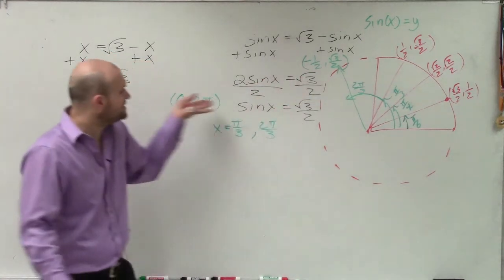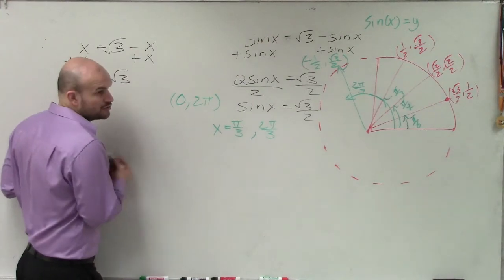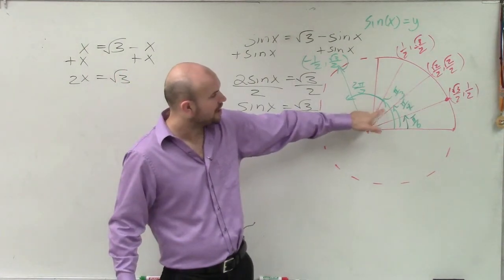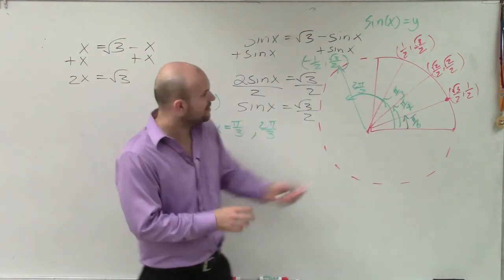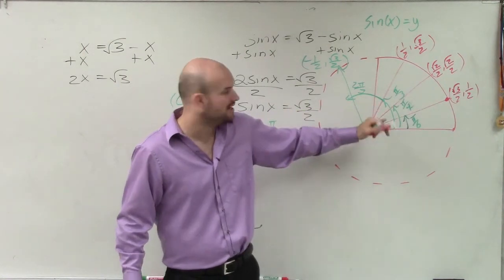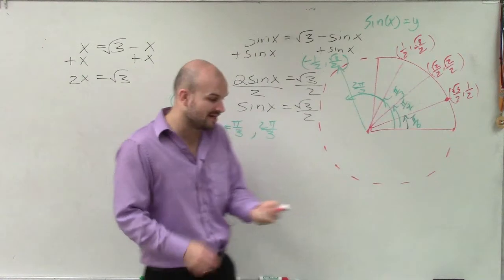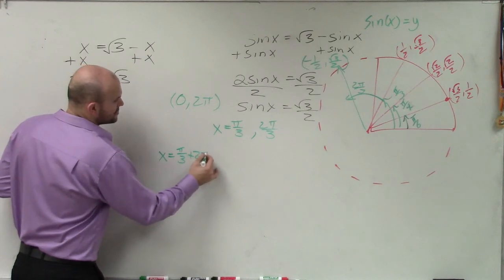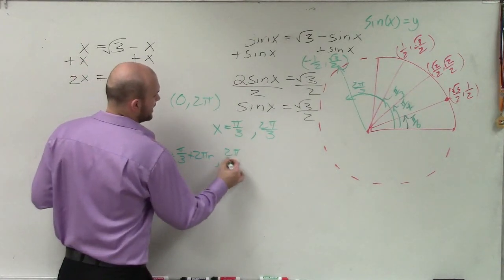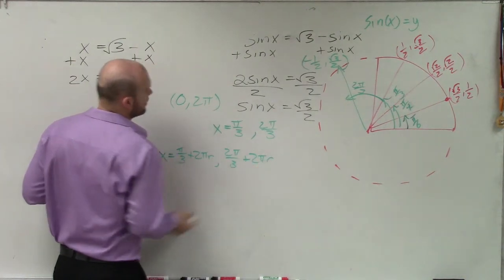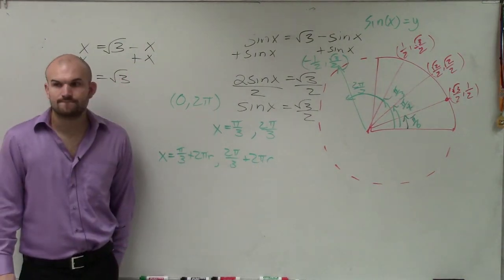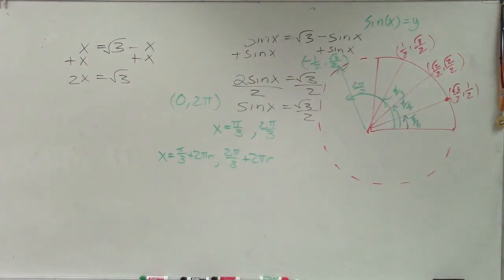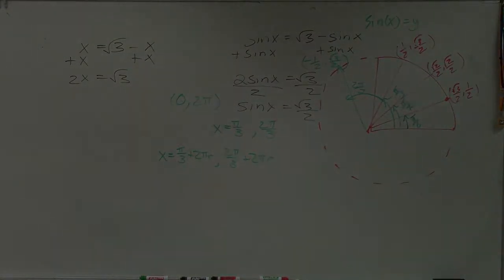Those are two solutions between 0 and 2 pi. However, if I say give me all the solutions, we understand that these two angles are not multiples of each other. So therefore, I can keep adding 2 pi to pi over 3, and keep adding 2 pi to 2 pi over 3, and get infinitely many solutions. So therefore, I'll have pi over 3 plus 2 pi n, and 2 pi over 3 plus 2 pi n.